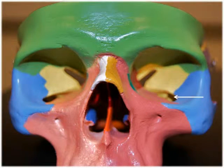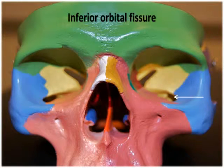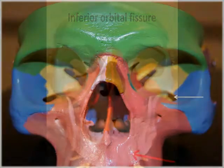Another opening associated with the maxillae is the inferior orbital fissure, which is located between the maxillae and the greater wing of the sphenoid bone.